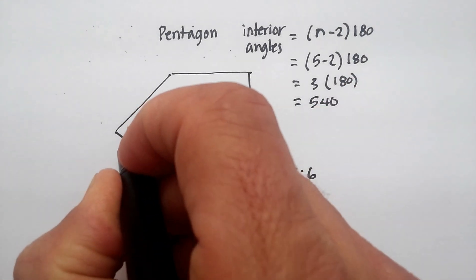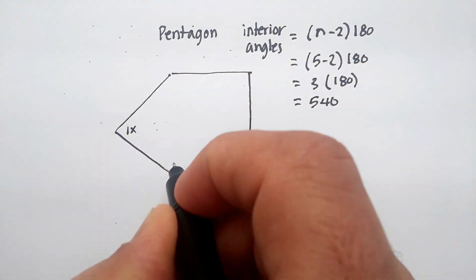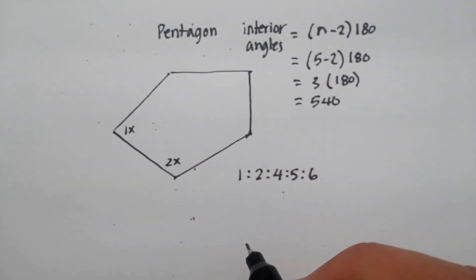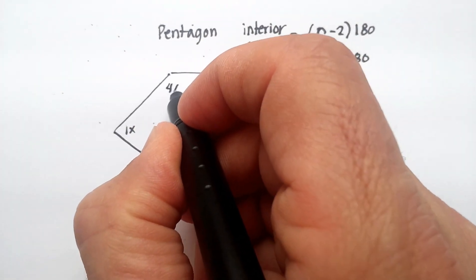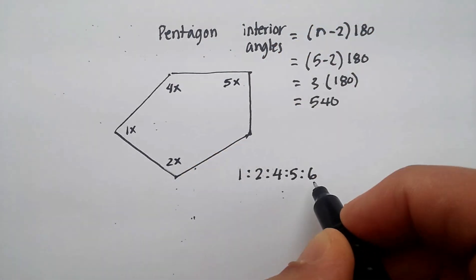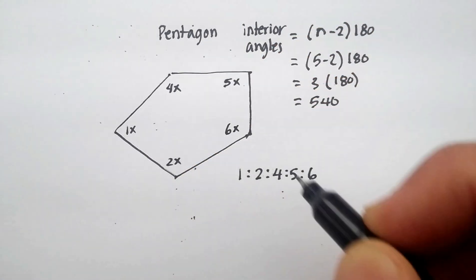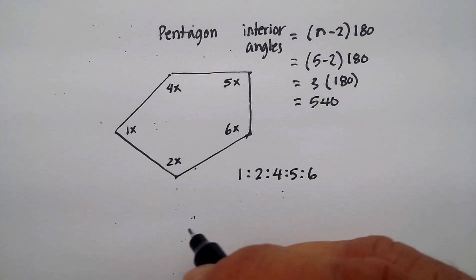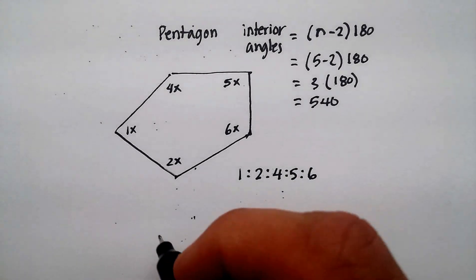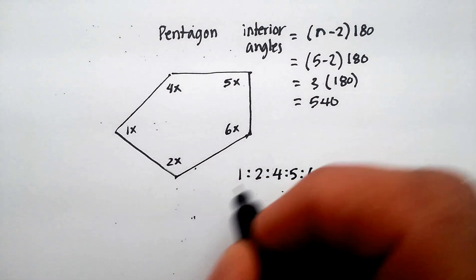So we'll call this 1x, we'll call this one 2x, we'll call this one 4x, we'll call this one 5x, and we'll call this large angle 6x. And I just go ahead and add those all up and equal 540 degrees.